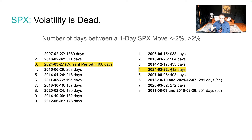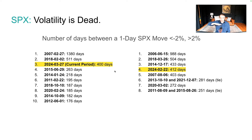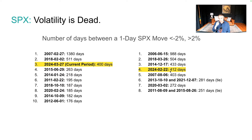Also interesting is days without a 2% move in either direction. It's extremely strange to have record calm in terms of drawdowns but also record calm in terms of moves up. We just had the fourth largest such period. The NVIDIA earnings came out, the market rallied, and since then — other than that one blip — we've had a month and a half of no more 2% moves.